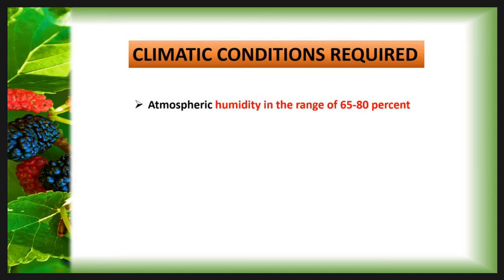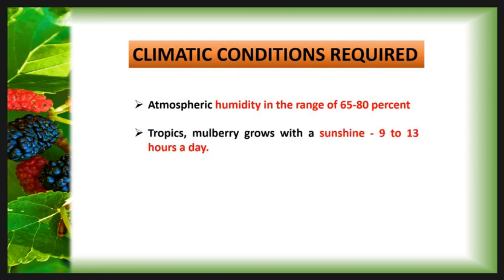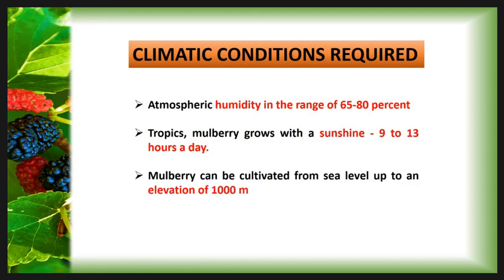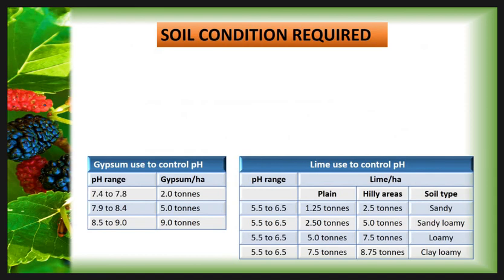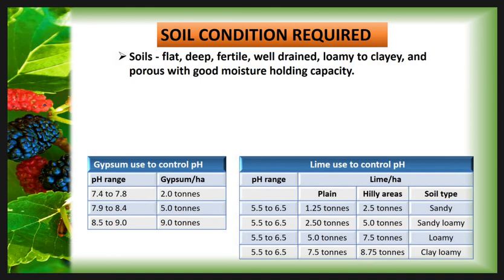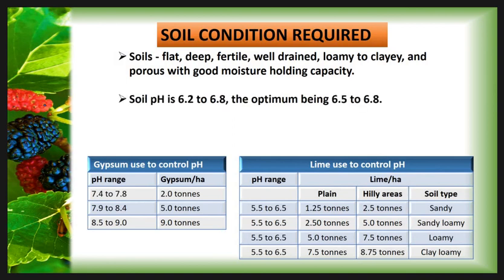Atmospheric humidity in the range of 65 to 80 percent is ideal for mulberry growth. Sunshine is one of the important factors controlling growth and leaf quality; in the tropics mulberry grows with sunshine ranging from 9 to 13 hours a day. Mulberry can be cultivated from sea level up to an elevation of 1000 meters. Mulberry grows well in soils that are flat, deep, fertile, well-drained, loam to clay, and porous with good moisture-holding capacity.